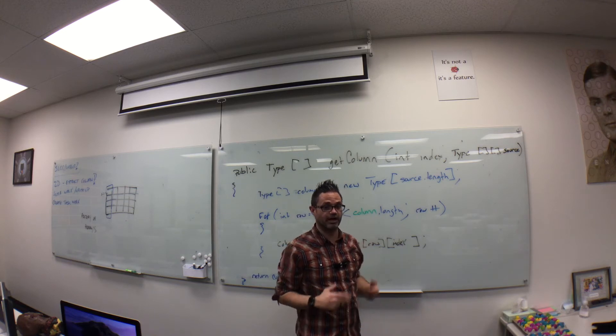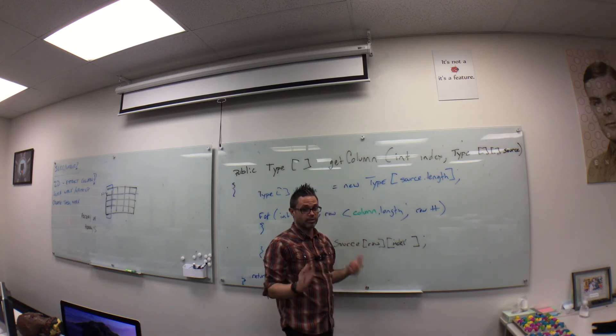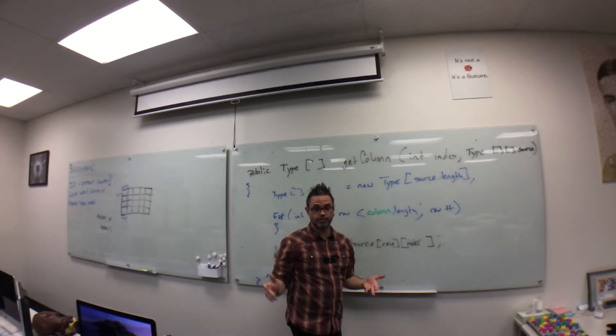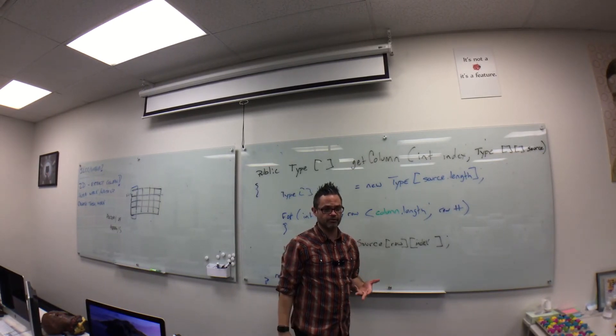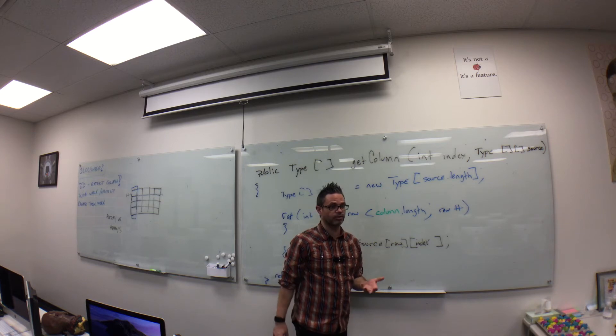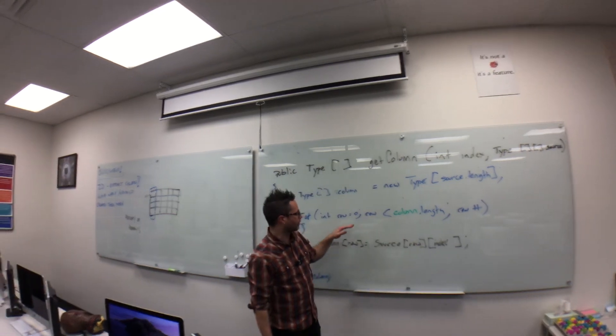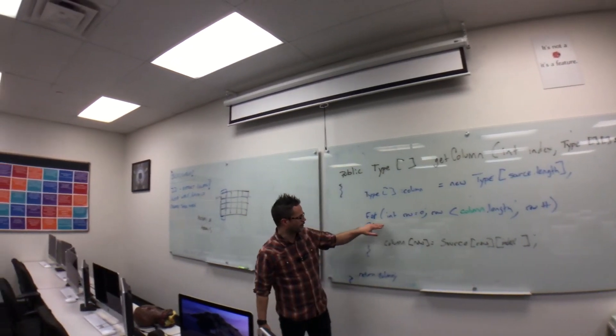The next step is to iterate over every single row. Since we're going over every single row, you'd think a for-each loop would be great. It would. However, with a for-each loop, we have to have an index we're working with, and we want to make sure we extract those values appropriately. So we're going to use a standard for loop.